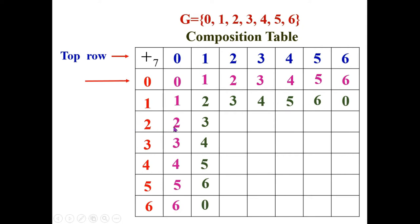Now filling the third row headed by 2. Already two elements are filled. 2+2=4, 2+3=5, 2+4=6. For 2+5=7: when 7 is divided by 7, the remainder is 0. For 2+6=8: when 8 is divided by 7, the remainder is 1. Having filled the third row, we fill the third column; the remaining 4 elements in the same order are 5, 6, 0, 1.